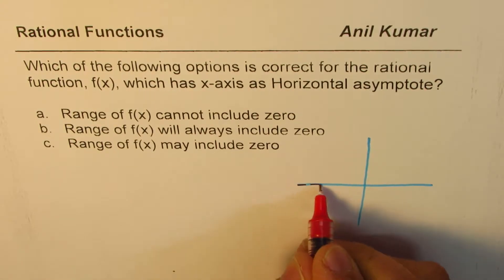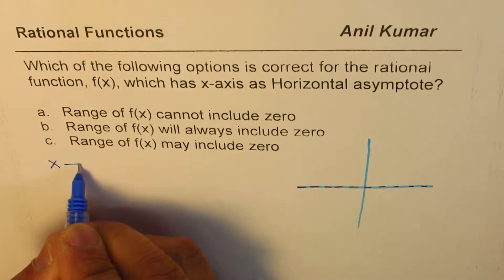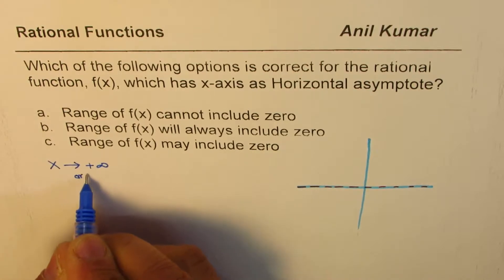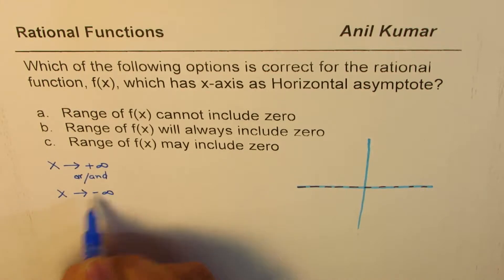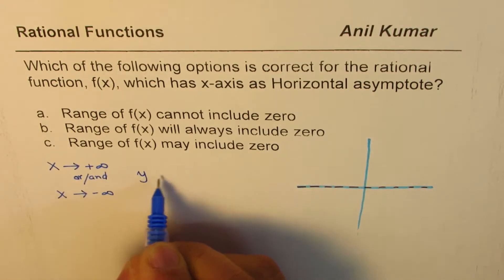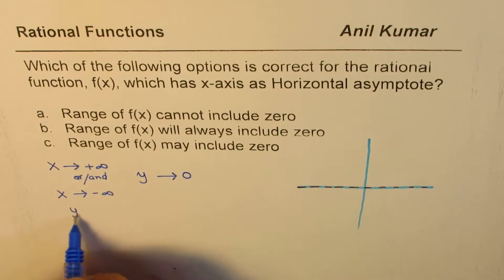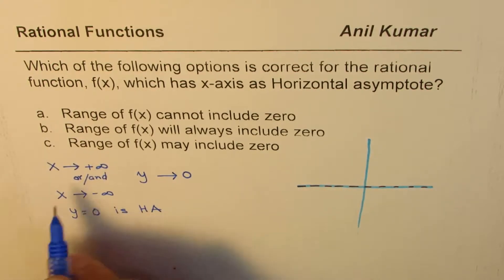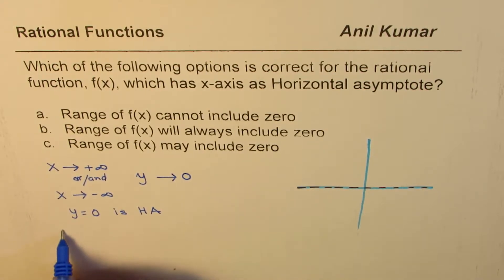The x-axis is your horizontal asymptote, which means that as x approaches positive infinity or as x approaches negative infinity, y approaches zero. So y equals zero is the horizontal asymptote. At times we also treat this as the end behavior of a function.